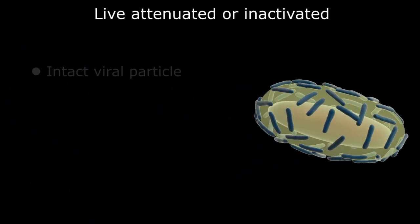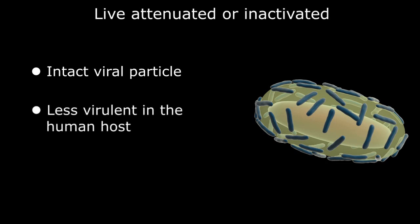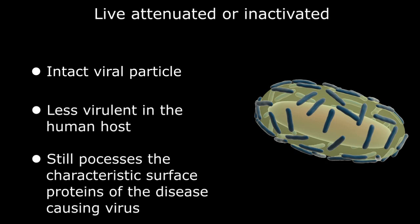As the name implies, live attenuated vaccines utilize an intact viral particle that is either naturally or artificially manipulated to be less virulent in the human host, but still possesses the characteristic surface proteins to train the immune system.